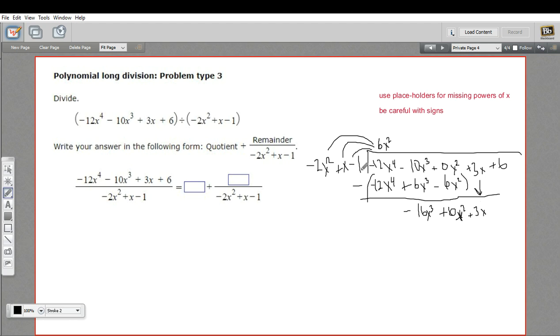And then we start this process all over again. What can I multiply negative 2x squared by to get negative 16x cubed? Well, that would be 8x. So that's going to multiply out to negative 16x cubed. And then I multiply the 8x by the x. That's going to be positive 8x squared. And then I multiply the 8x by negative 1. That's going to be minus 8x. And then we subtract. So negative 16x cubed minus a negative 16x cubed is 0. And then we have positive 6x squared minus 8x squared. So that's negative 2x squared. And then we have 3x minus a negative 8x. So that's like plus 8x. So that's 11x. And then we bring down our next term, which is the 6. Luckily, that's our last one.